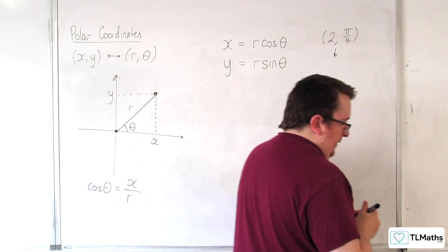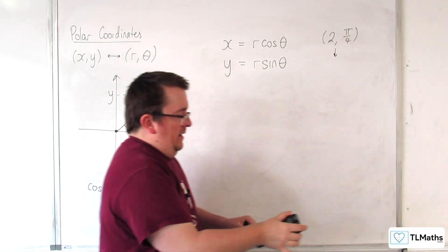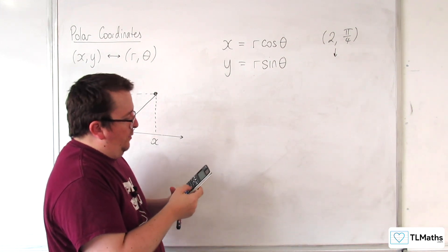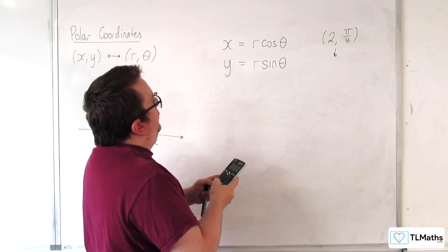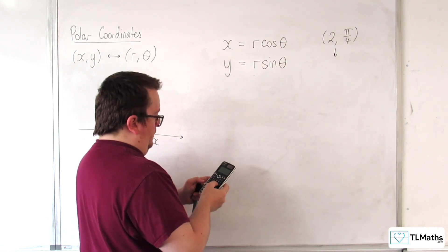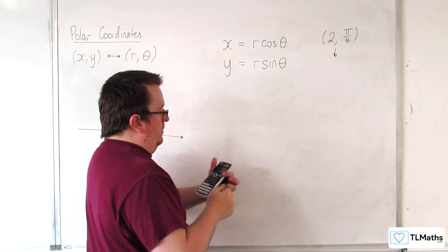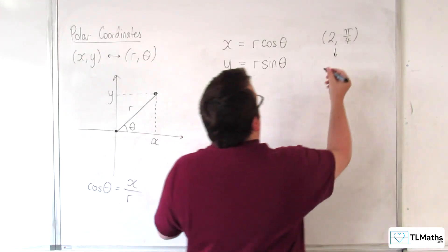So then, in general, we would be able to do 2 times cosine of π/4 and get your first point, which is root 2.